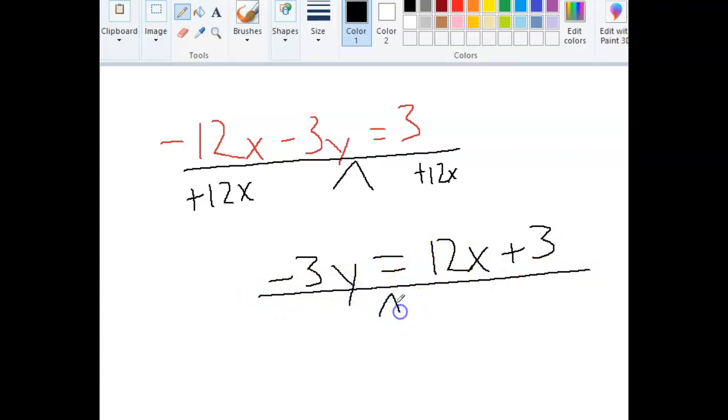So I still got a balanced teeter-totter here. And the last step, the only thing I need to get rid of, is this negative 3 being multiplied by y. And so if I want to get rid of that, the opposite of multiplication is division. So now I'm going to divide both sides by a negative 3. Let me write the division sign here, divide both sides by a negative 3.